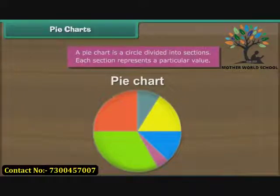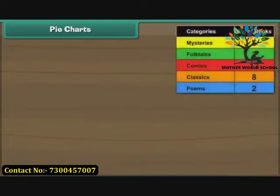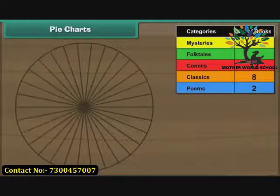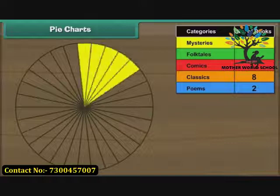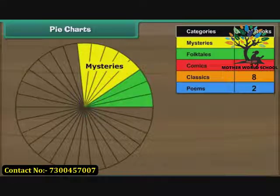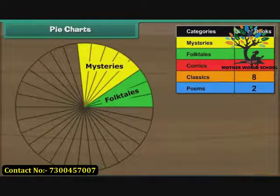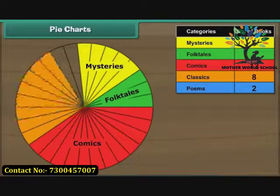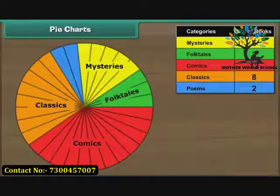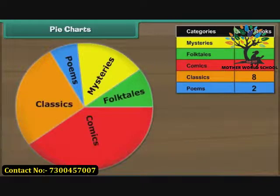A pie chart is a circle divided into sections. Each section represents a particular value. Let us now organize Ravi's data with the help of a pie chart. Here is a circle divided into 30 sections, each section representing a book. Let us color five adjacent sections yellow and write mysteries. Then color the next three adjacent sections green and write folktales. We count the next 12 sections, color them red and write comics. Finally, we color the remaining two sections blue and write poems. The pie chart is ready.